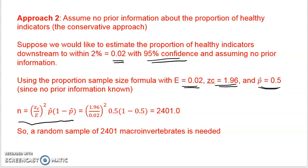For the proportion, the critical value is zc over E squared times p-hat times 1 minus p-hat. Using the data from the problem, that's 1.96 over 0.02 times 0.5 times 1 minus 0.5.